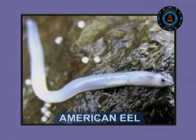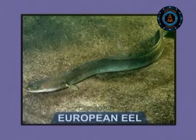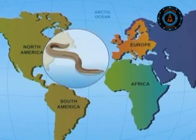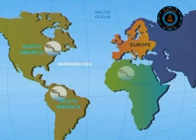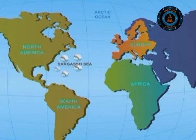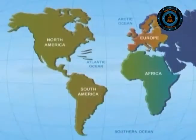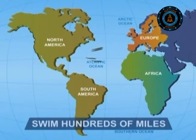The migratory pattern is opposite in both the American eel and European eel. Their adult life is spent in rivers and lakes in America, Africa and Europe, but they return to the depths of the Sargasso Sea to breed and die. The next generation of young eels, known as elvers, must find their long way back to freshwater. These elvers are only 5 to 10 centimeters in length but swim hundreds of miles to reach rivers where they feed and grow.